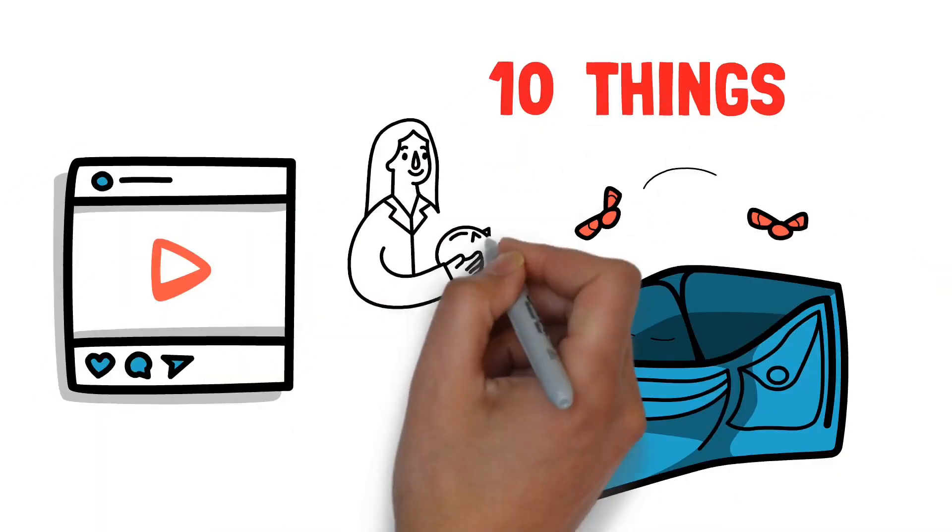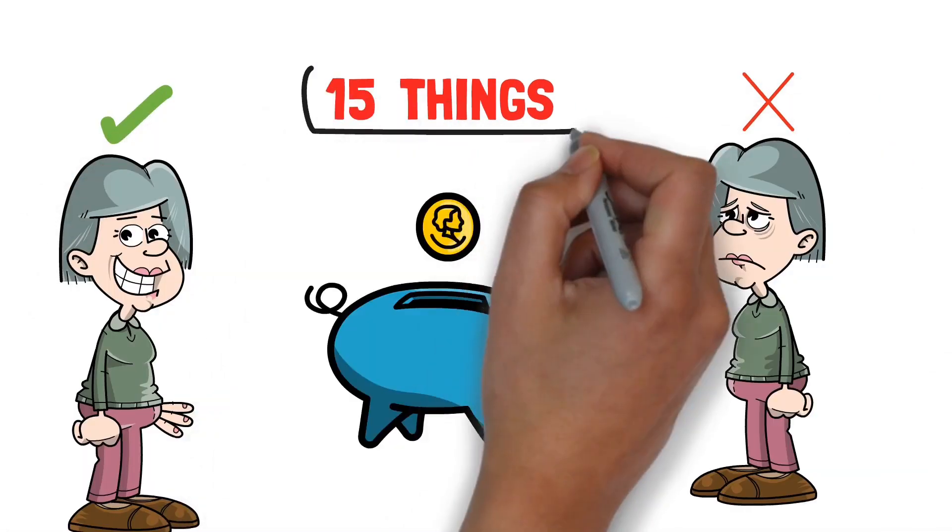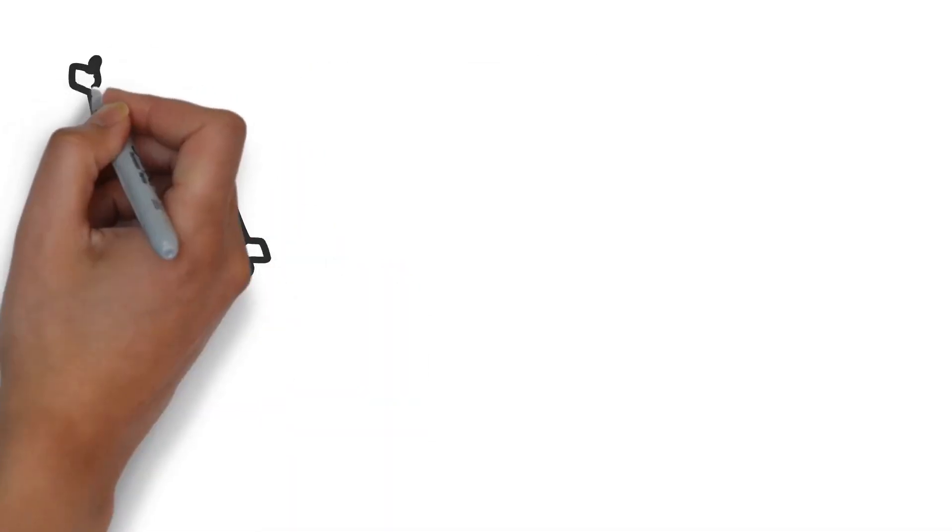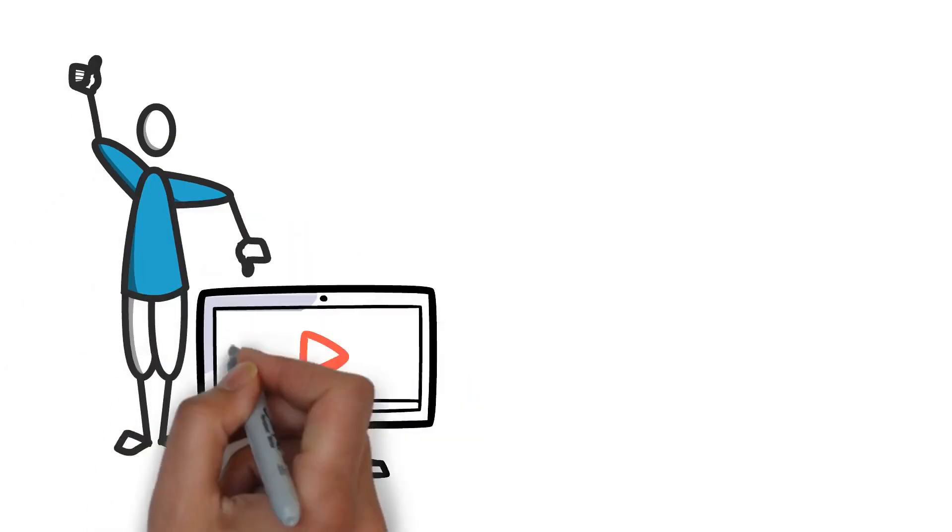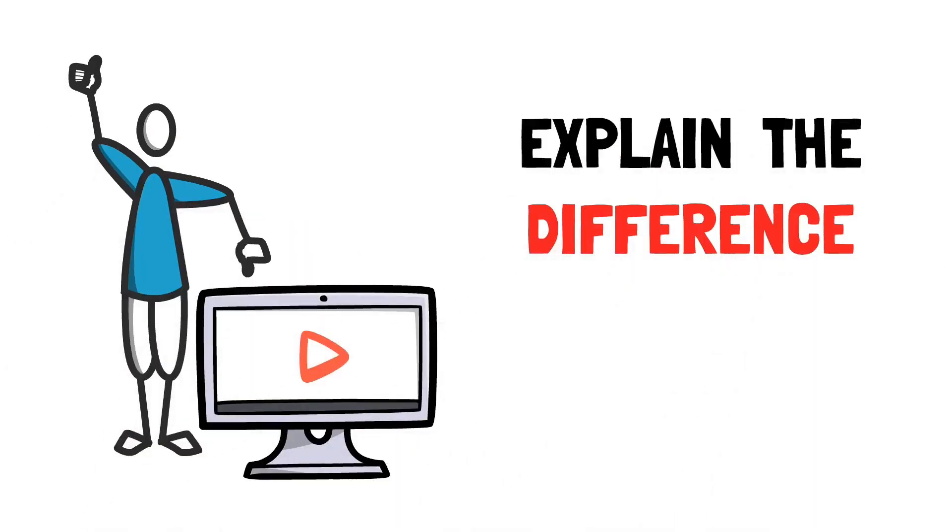YouTube is filled with videos such as 10 things poor people do that the rich don't or 15 things rich people do that the poor don't or something along those lines. Many of them are quite interesting and fun to watch but they don't really explain the difference.